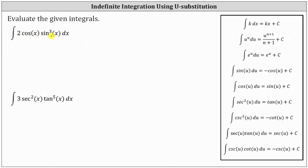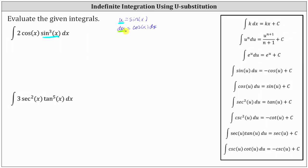Because we have cosine to the first power and sine to the third power, we will let u equal the trig function raised to the power of three, and therefore we'll let u equal sine x. So if we let u equal sine x, then sine cubed x is equal to u cubed, and we'll have a two cosine x dx. The differential du is equal to the derivative of sine x with respect to x times dx, which is cosine x dx. Since du equals cosine x dx, we can replace cosine x dx with du, and then factor out the two.